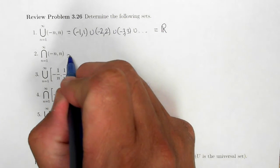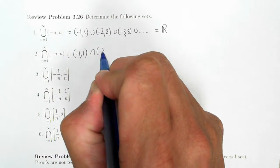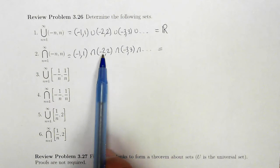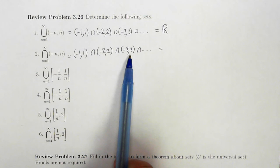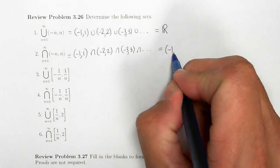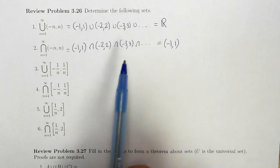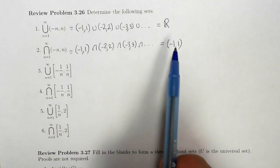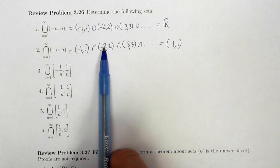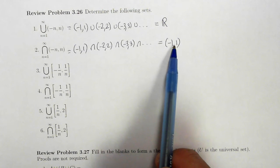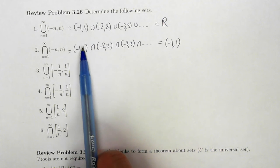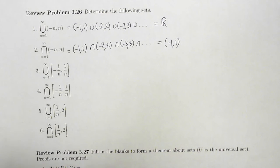Now if I take the infinite intersection — negative 1 to 1, intersect negative 2 to 2, intersect negative 3 to 3, and so on — the intervals are getting progressively longer, so the intersection will simply be negative 1 to 1. If I take a number like one half, that's between negative 1 and 1, it'll be contained in every single one of these intervals. However, if I take something like 1 and a half, it will be in the second and third intervals, but 1 and a half will not be in the first one. So 1 and a half cannot be part of this infinite intersection.